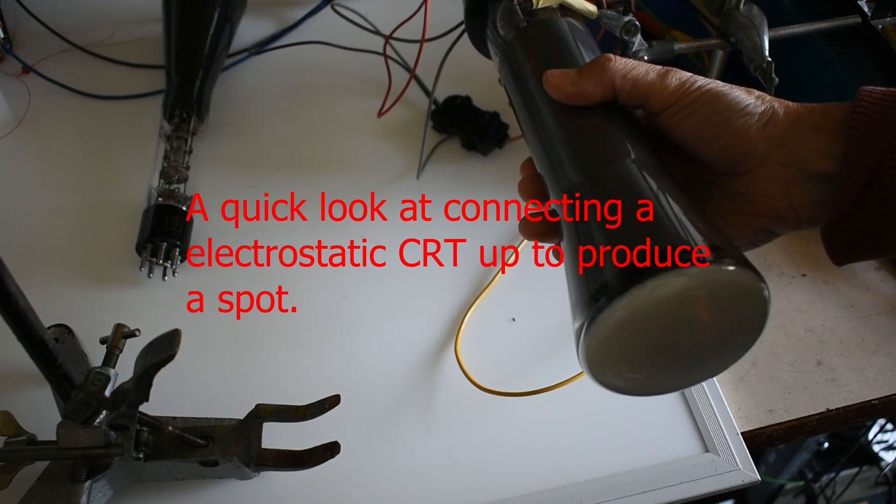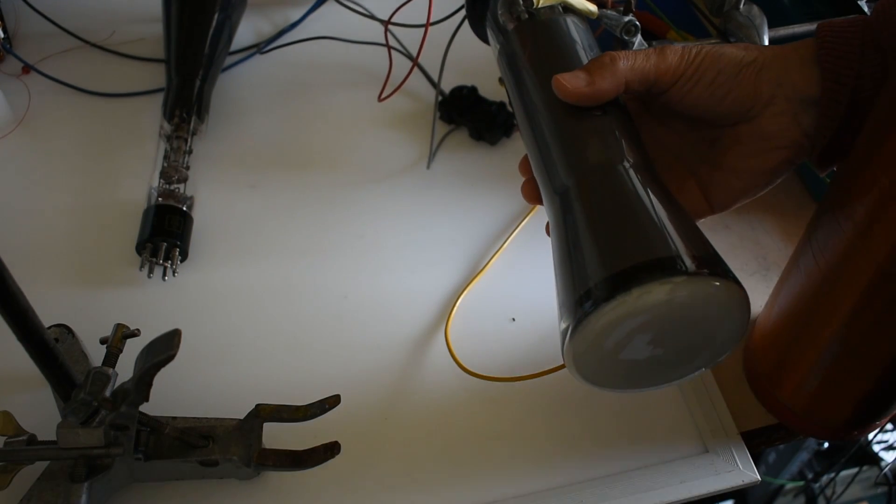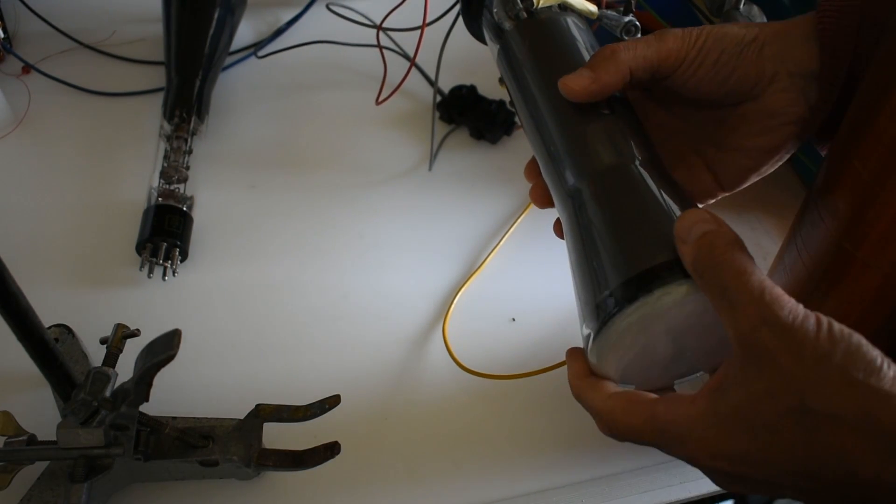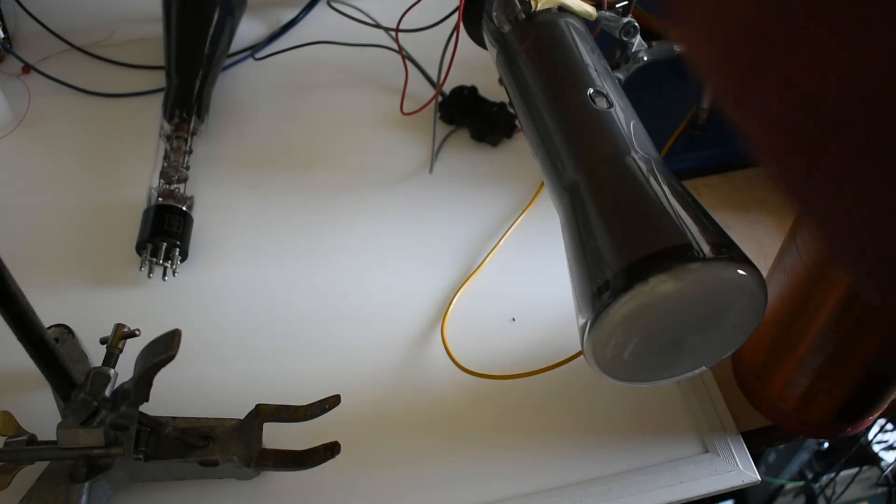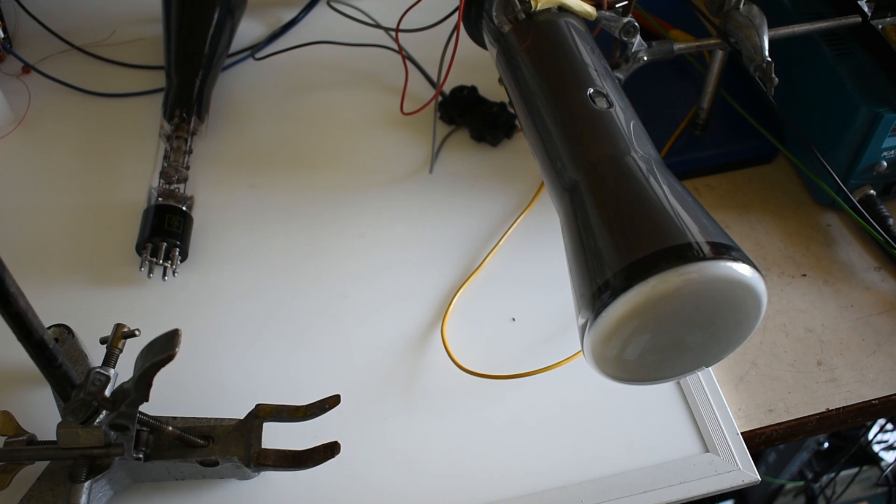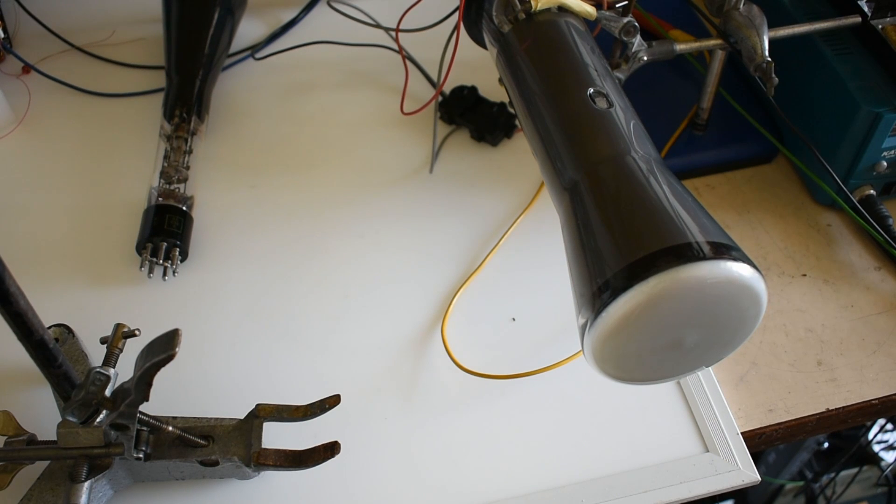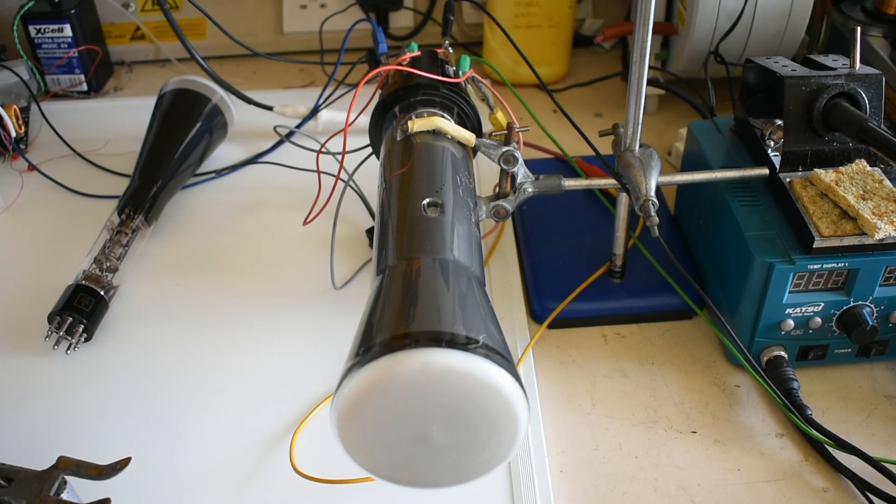This is quite an old CRT and in fact it dates back from the Second World War from early radar. But it's basically an oscilloscope cathode ray. Many after the war were used as surplus to homemade oscilloscopes and the likes.